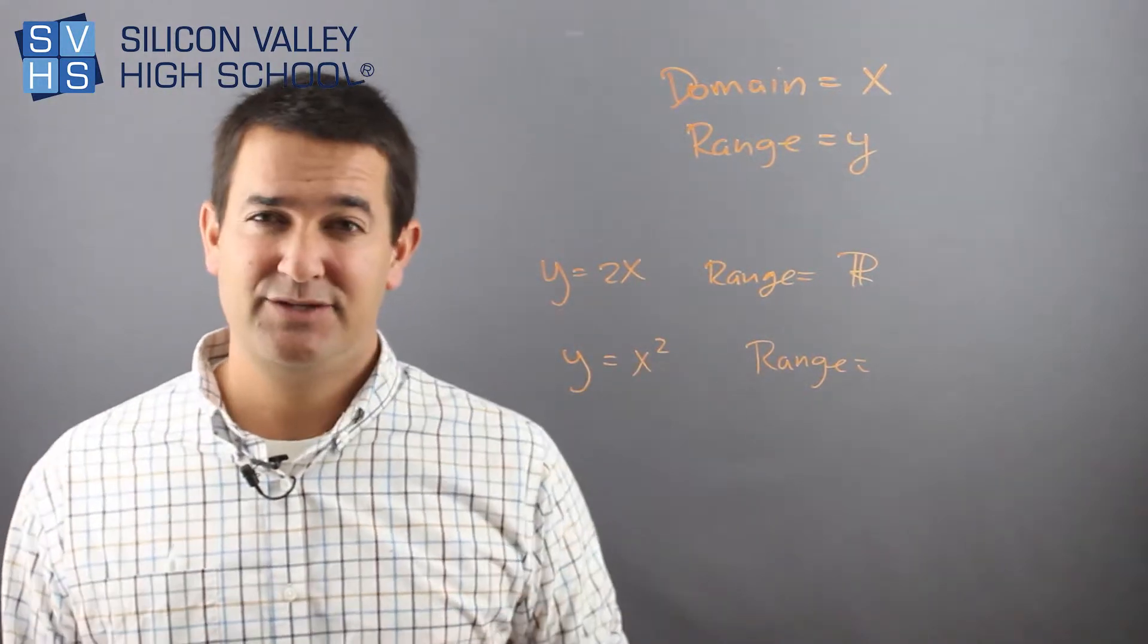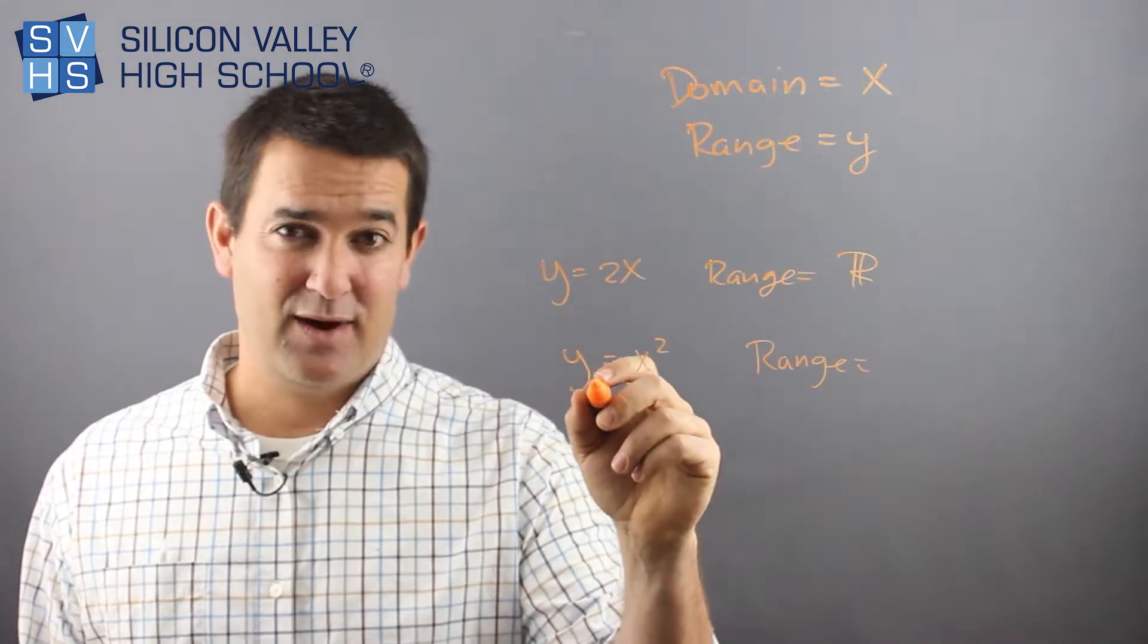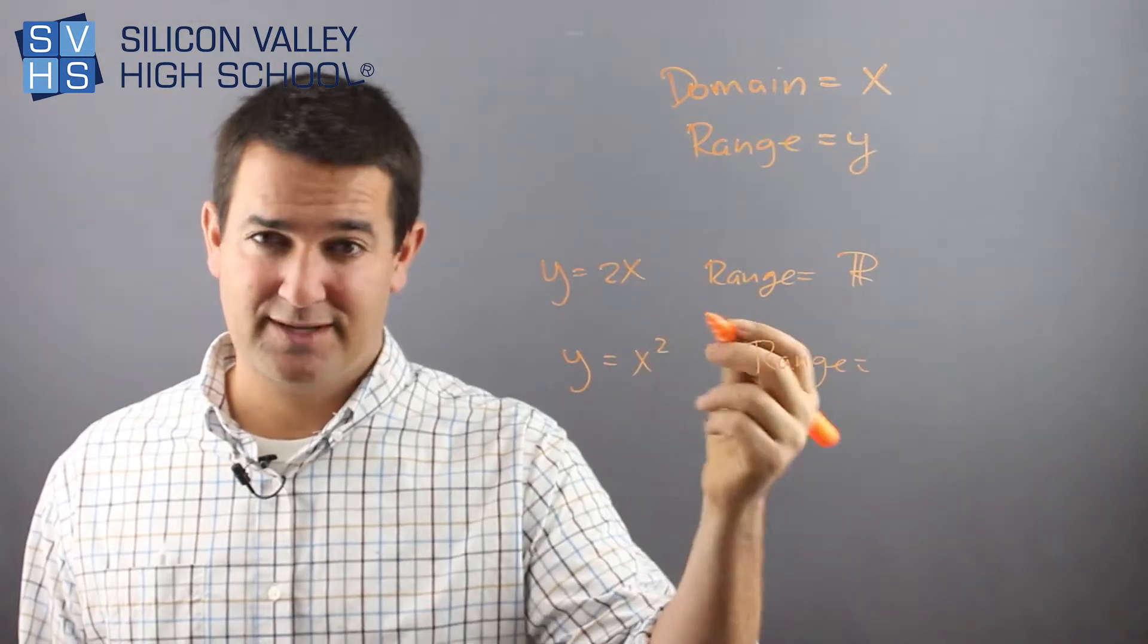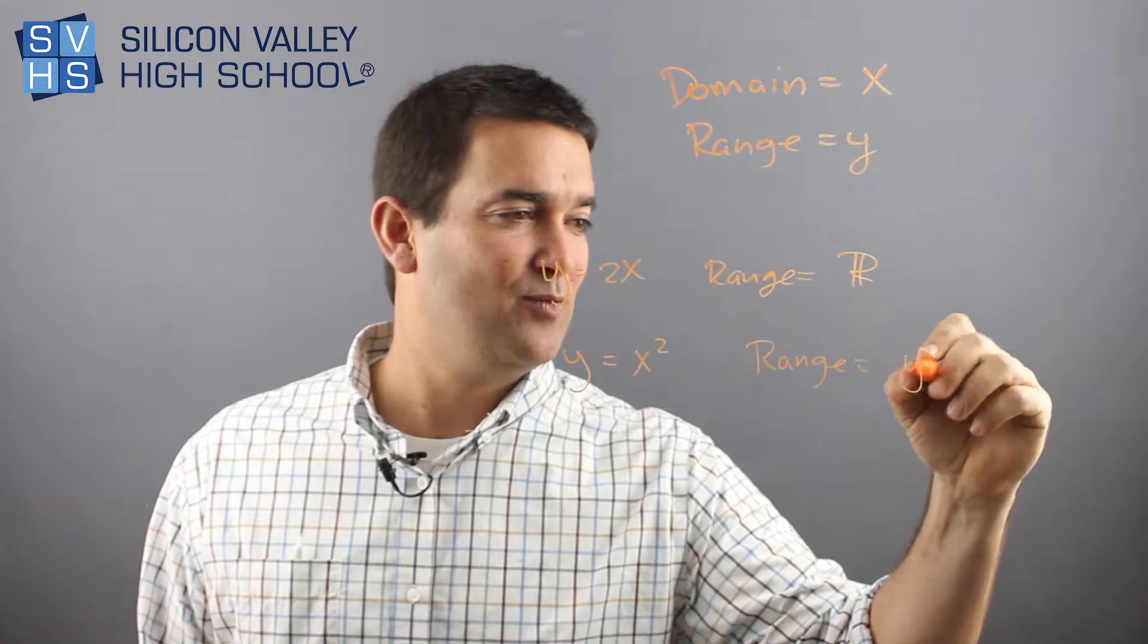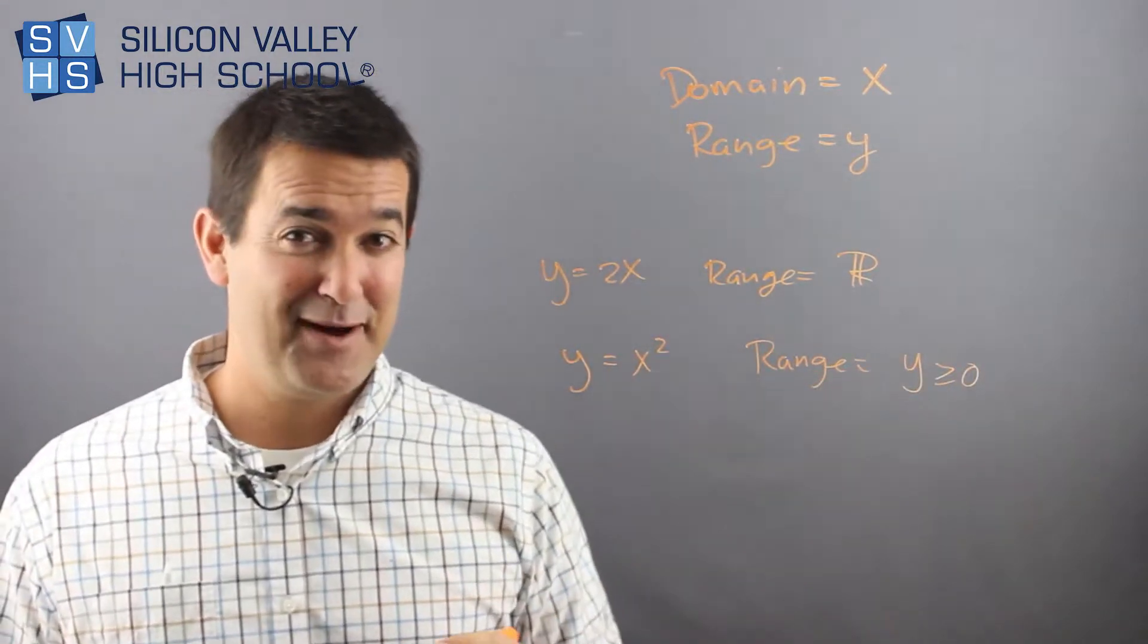So actually, by looking at this, you know right away that there is no case in which I can get a negative Y. I can get zero. What's zero squared is zero. So this one range would be Y is greater than or equal to zero. So that's kind of a problem right there.